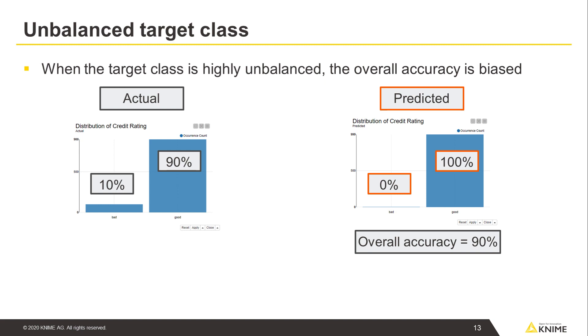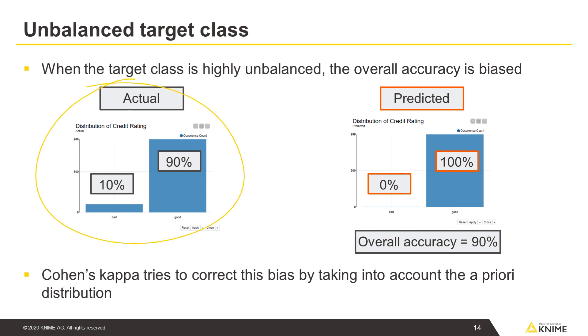Cohen's kappa tries to correct this bias by taking into account the a priori distribution of the target classes.